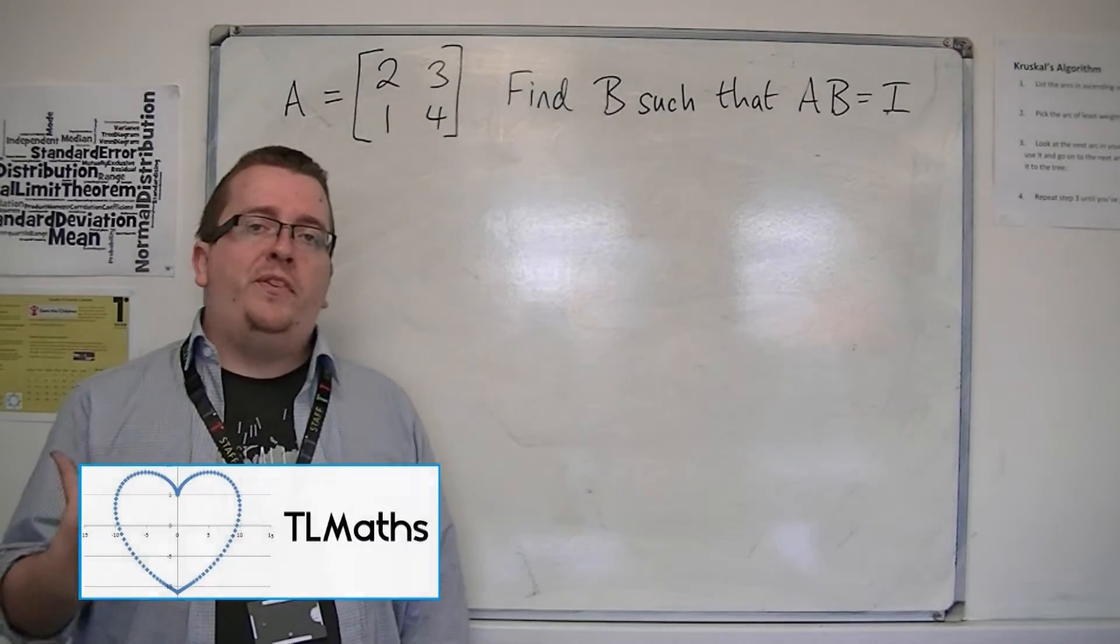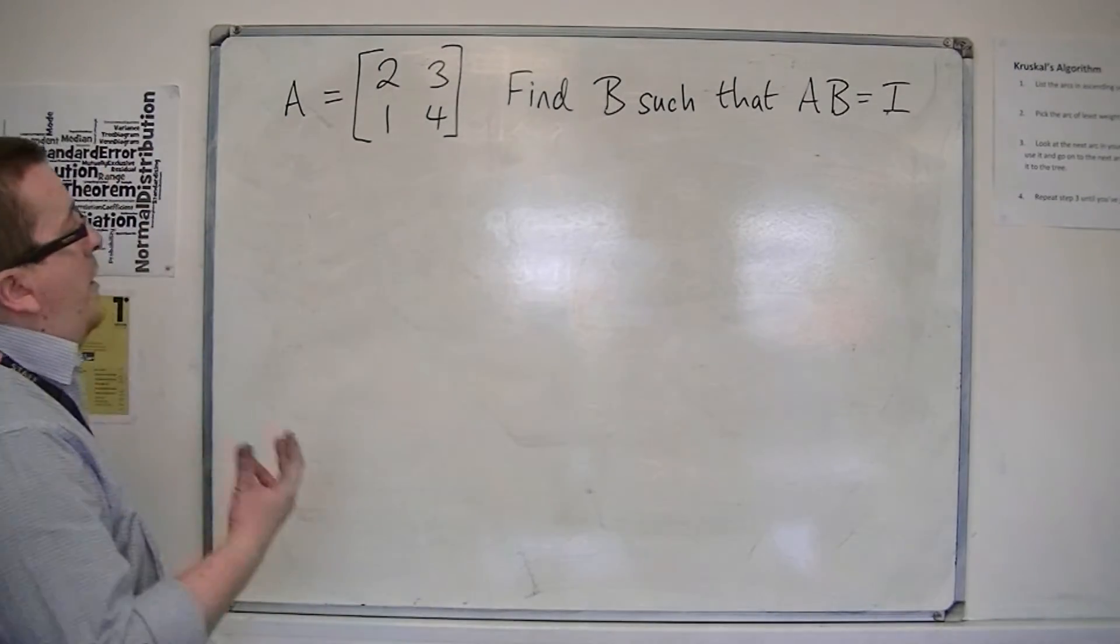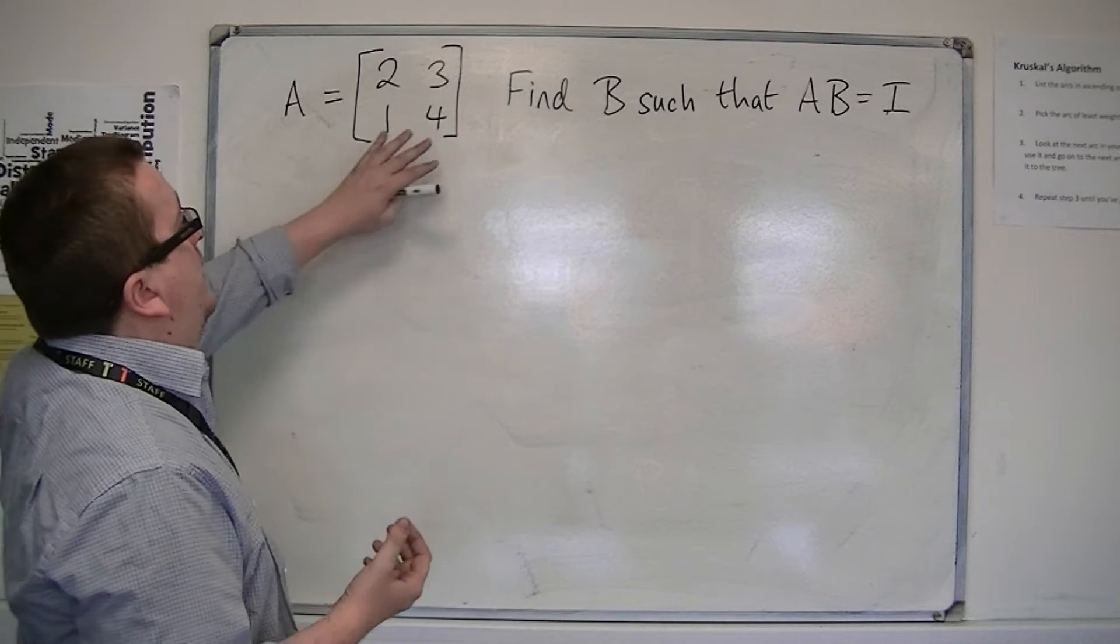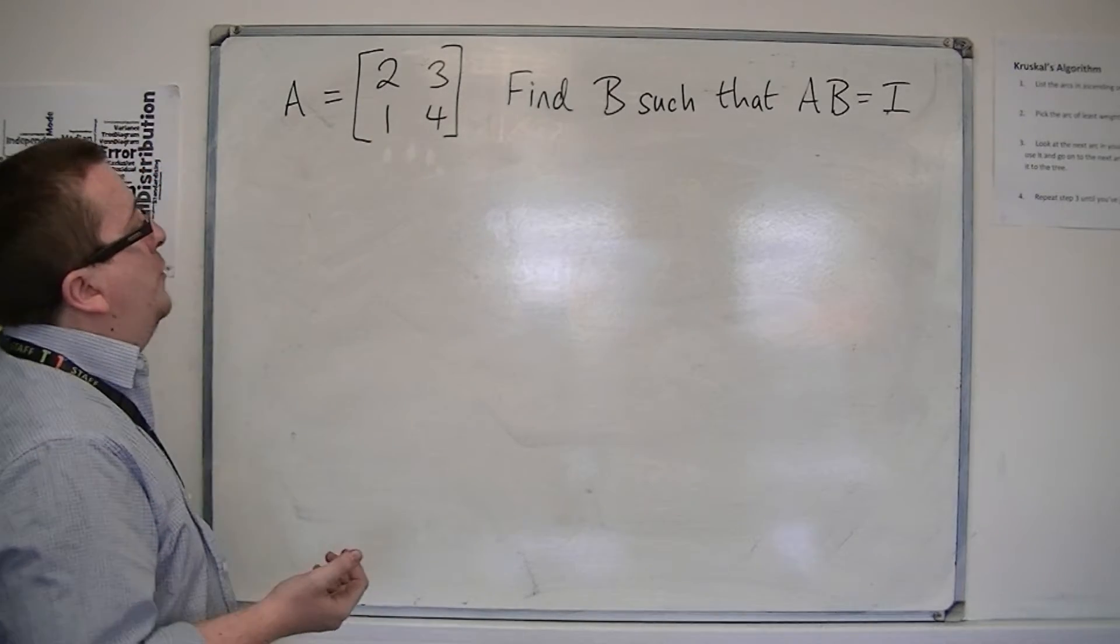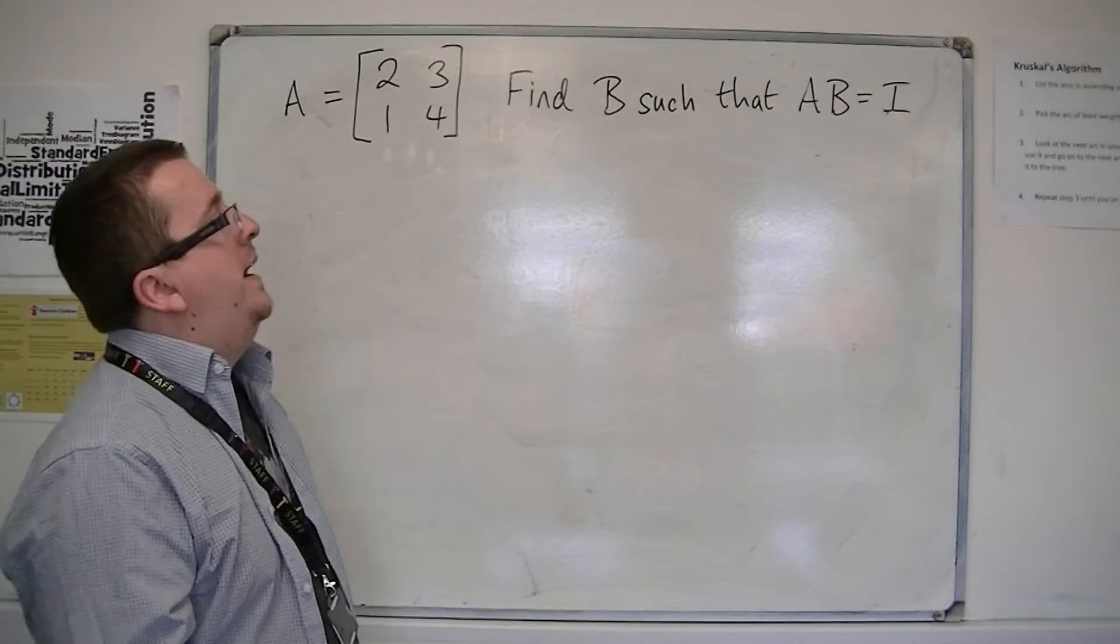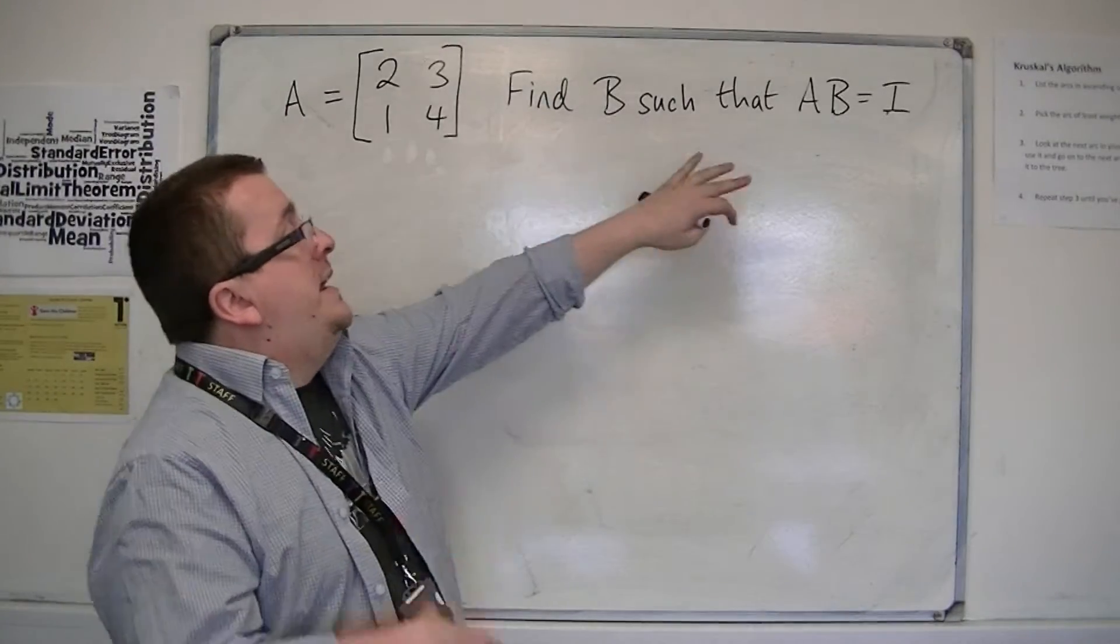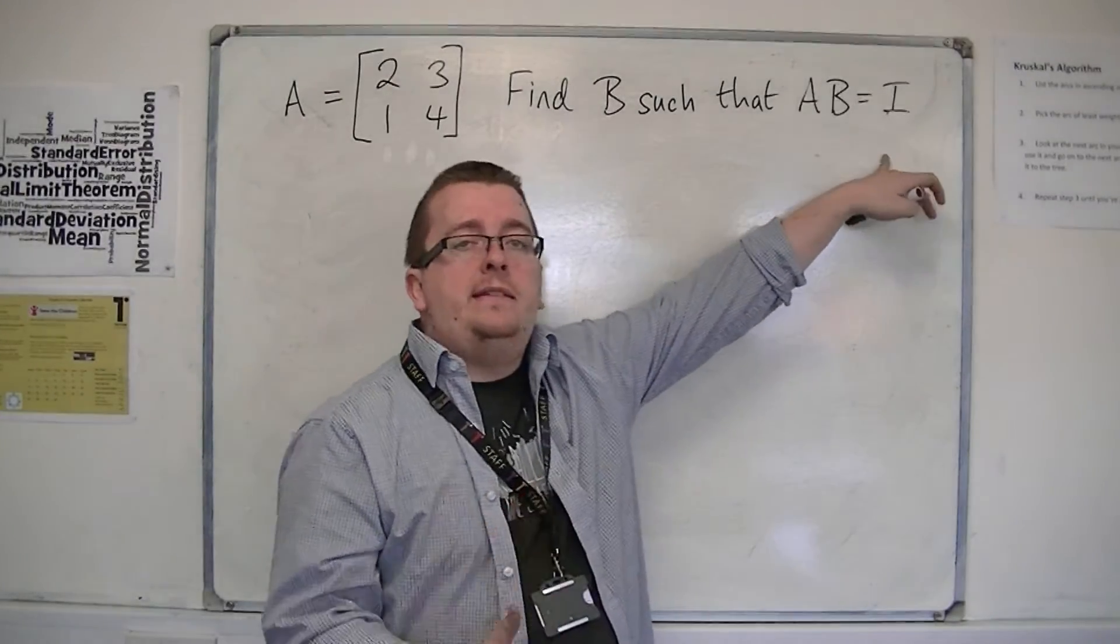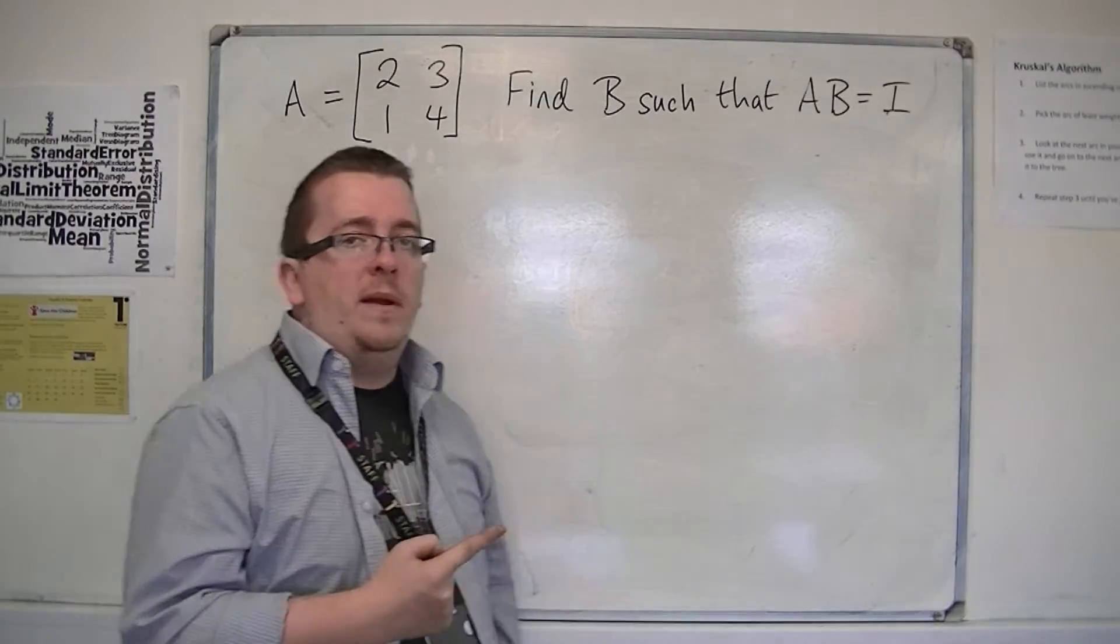In this video we're looking at a particular problem where I've been given the matrix A, this 2x2 matrix [2, 3; 1, 4], and we want to find another 2x2 matrix called B such that AB is equal to I, the identity matrix.